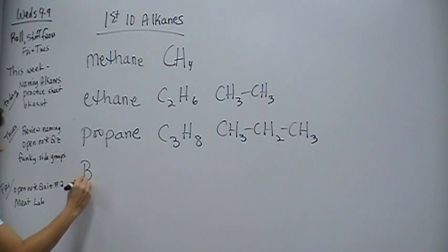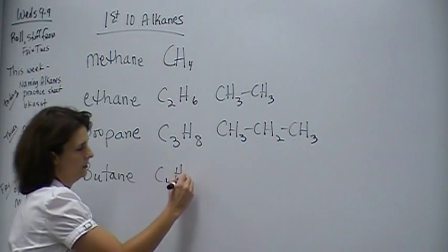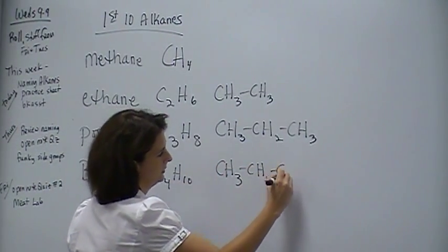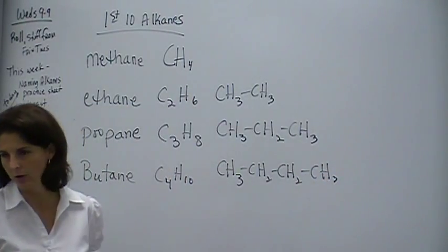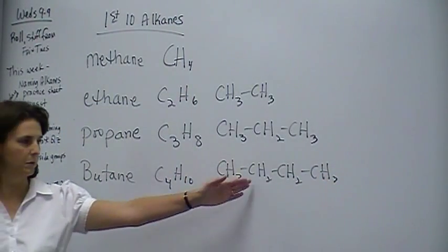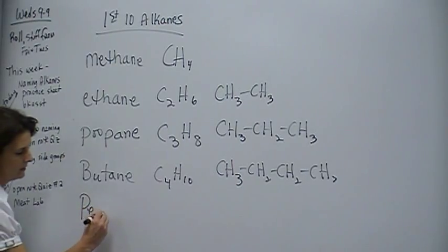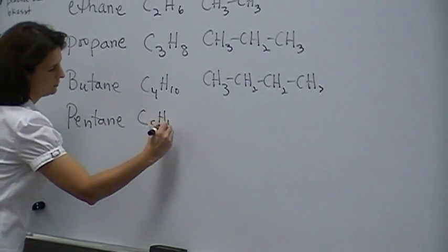After propane is butane, C4H10, CH3CH2. Now, the reason I'm not going to keep writing these is because it takes too long. All you've got to do is add a CH2 in the middle. We're just going to do the first ten. After butane is pentane, C5H12.